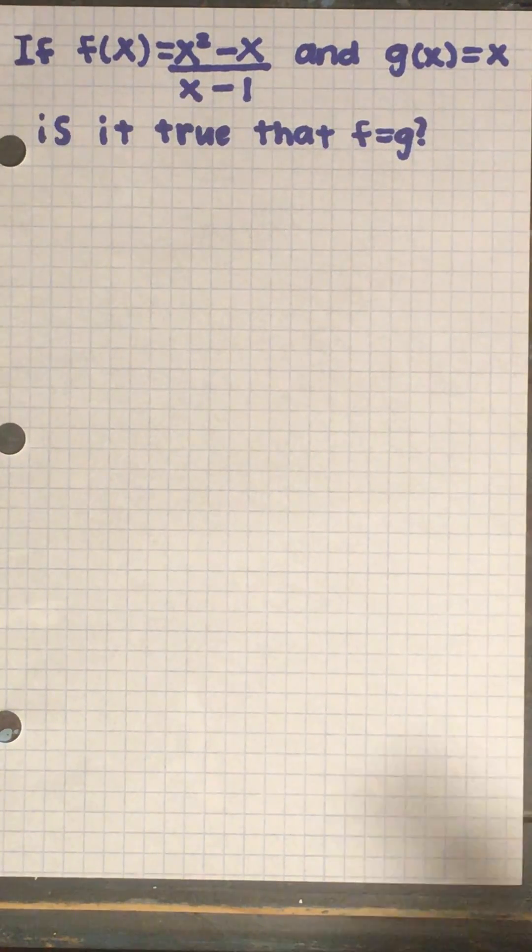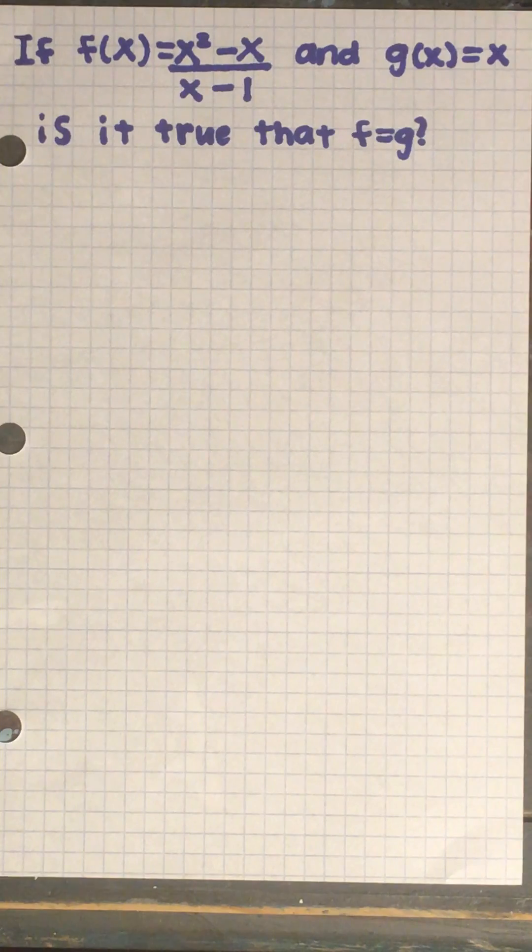We want to ask the question: if f of x is equal to x squared minus x over x minus 1, and g of x is equal to x, is it true that f equals g?